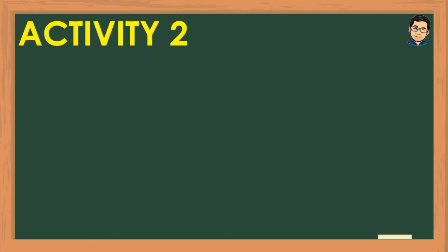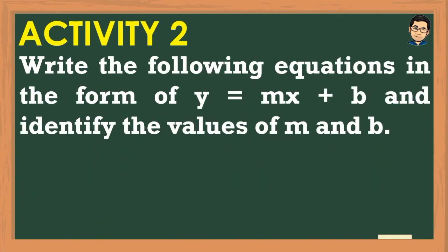For Activity Number 2, it's the other way around. We will write the following equations in the form y = mx + b and identify the values of m and b. Here, m is the slope and b is the y-intercept.